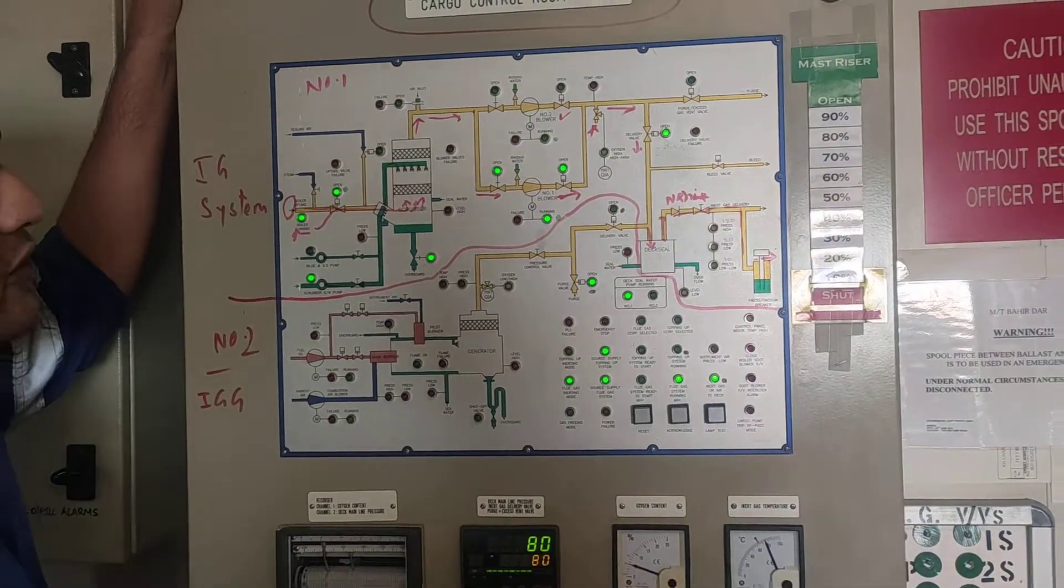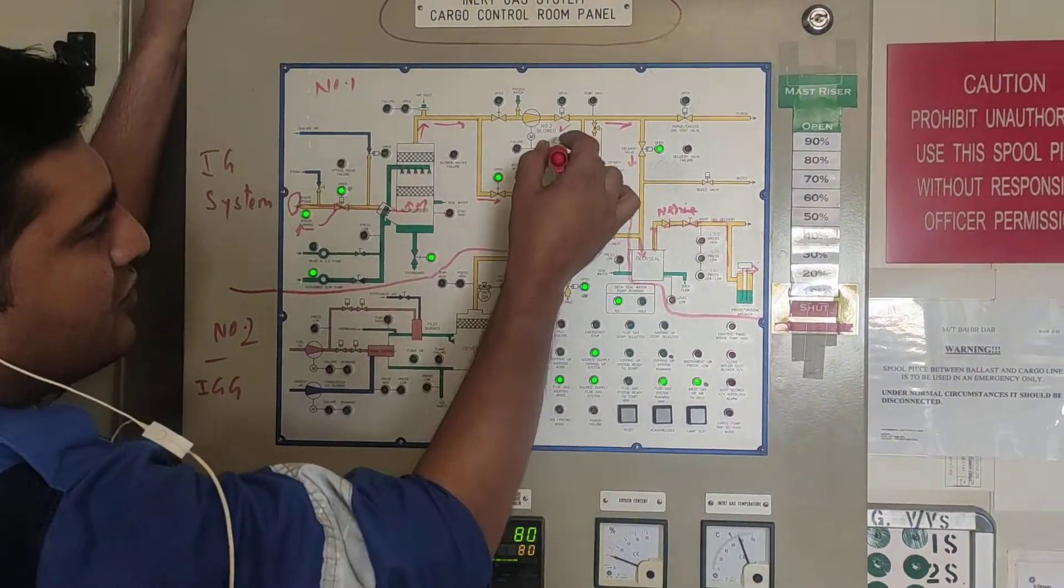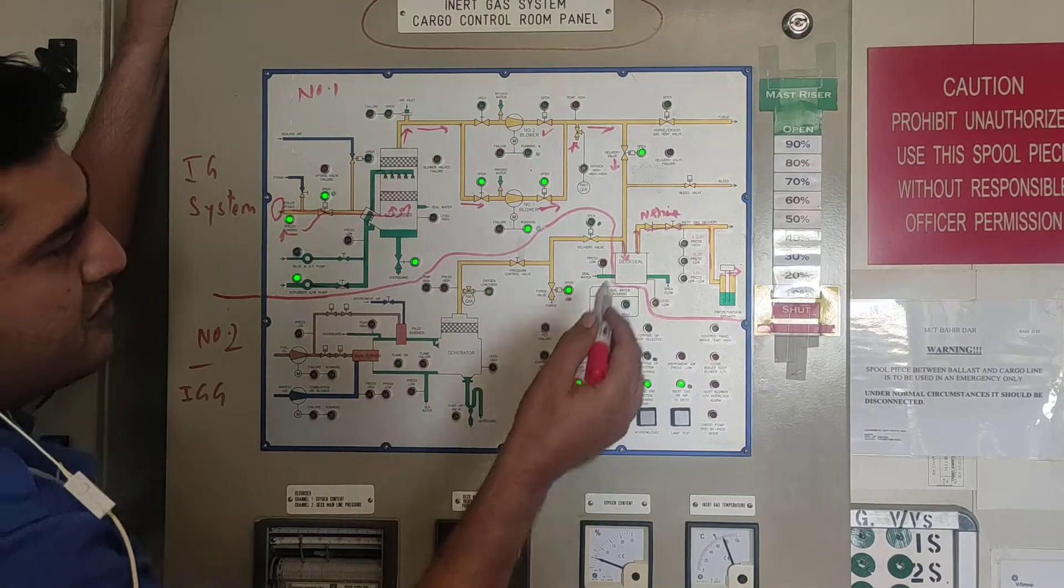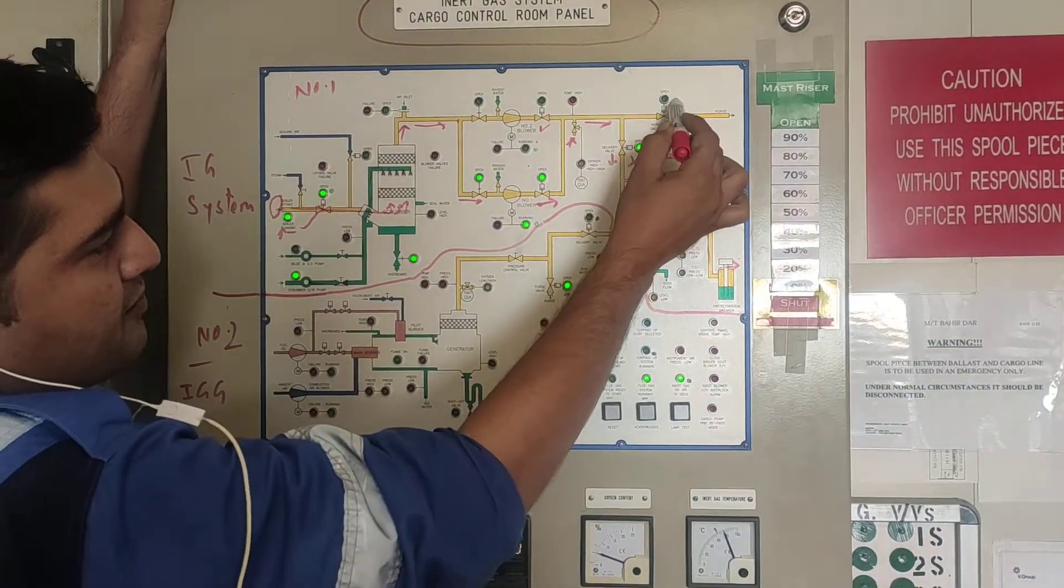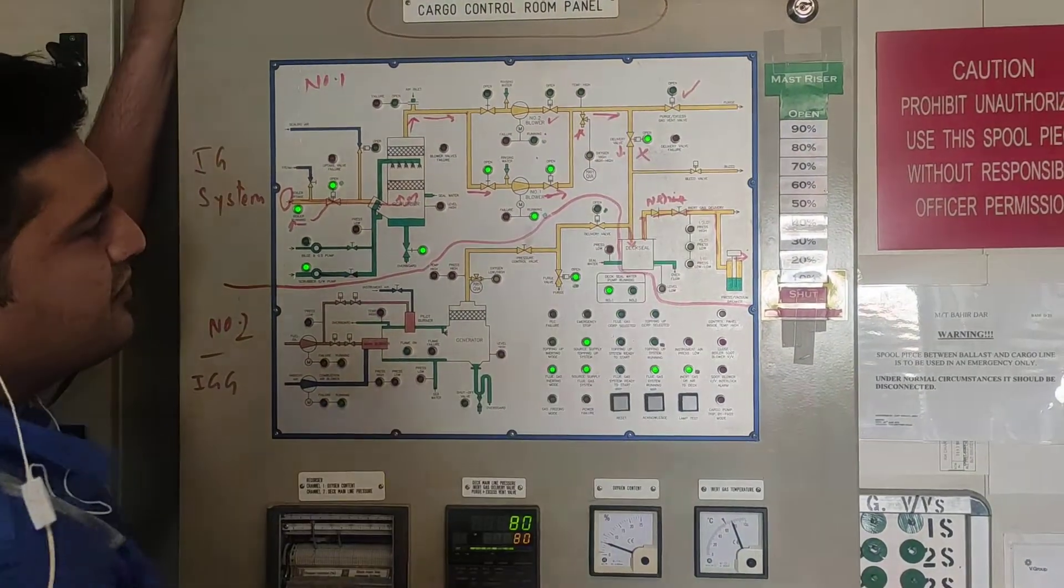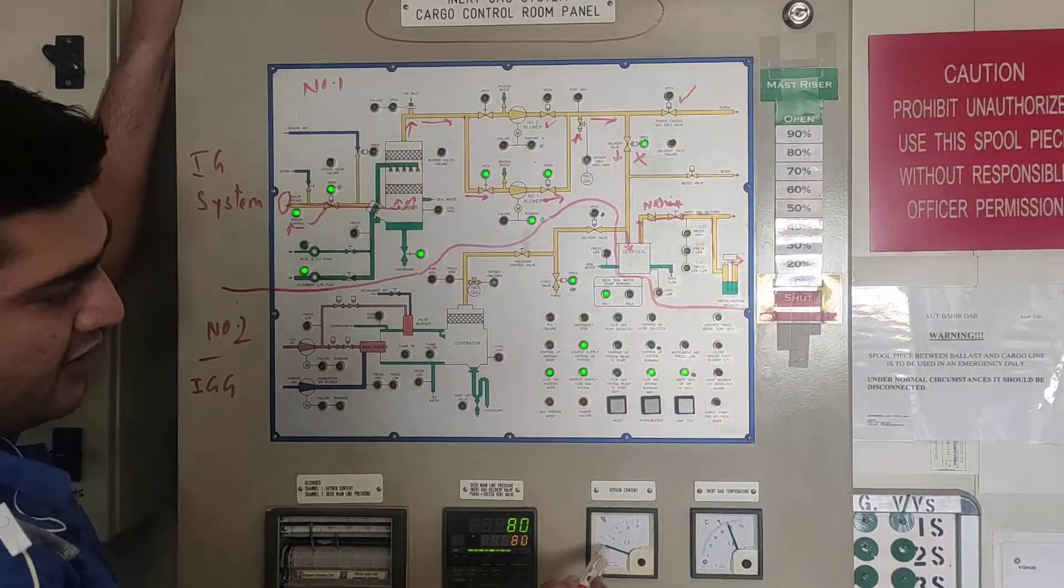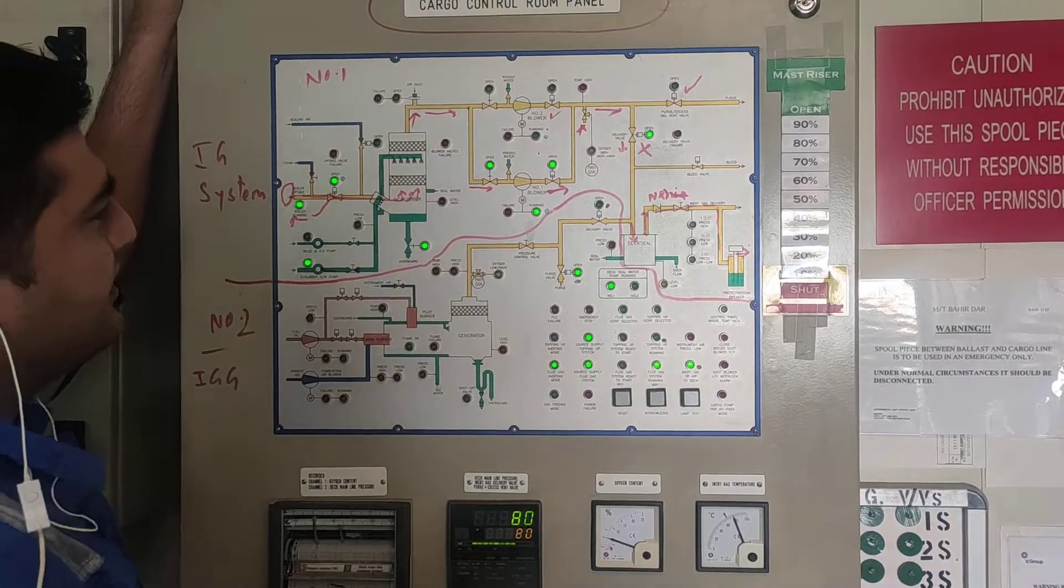This is the path the IG is flowing. You can use either number one blower or number two blower. If your oxygen content increases, then this delivery valve will automatically close and the purge to the air will open and IG will be released to the atmosphere. Till that time the oxygen content is reduced to less than 5%.